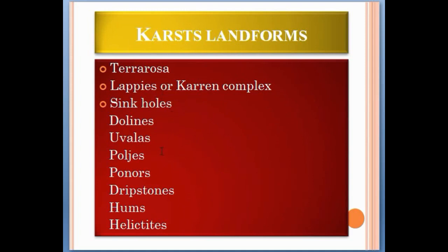The list of karst landforms includes: Terra Rosa, lapies or Karen complex, sinkholes, dolines, uvalas, poljes, ponors, dripstones, hums, and helictites. These are the actual forms associated with karst topography.